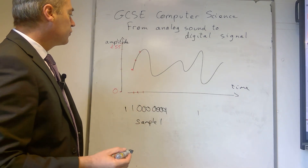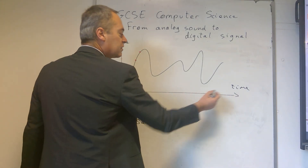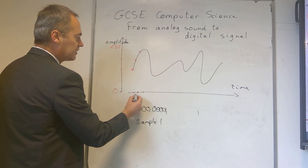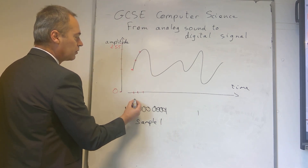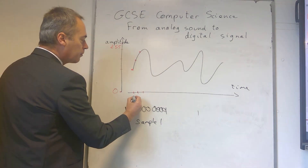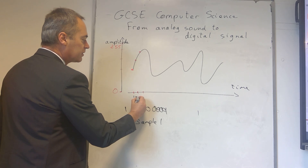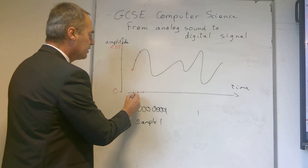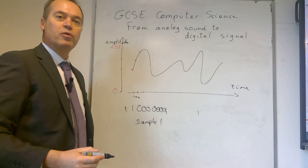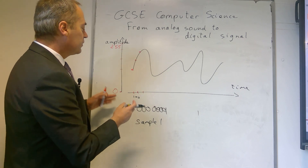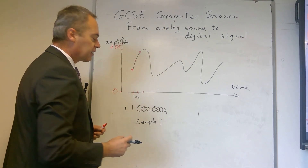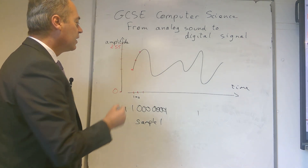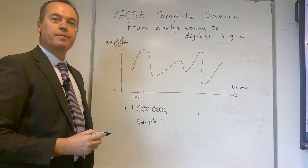One more thing to remember: this horizontal axis is time. There might be one millisecond between each sample, for example. If you take the inverse of that measurement, it will give you the frequency at which the samples are taken.